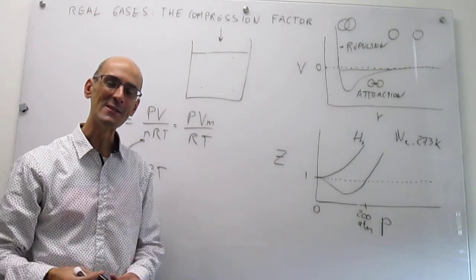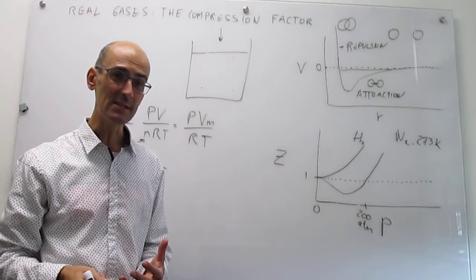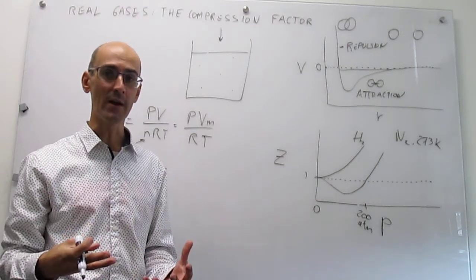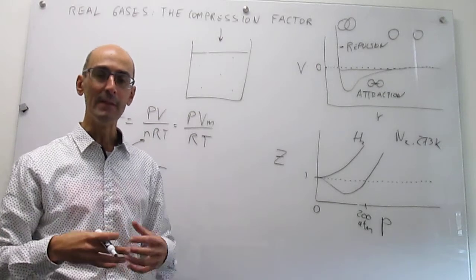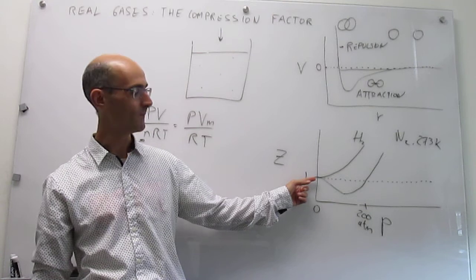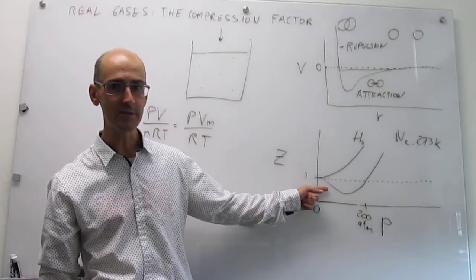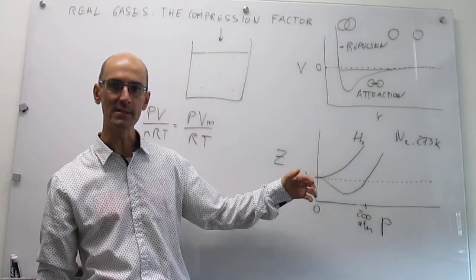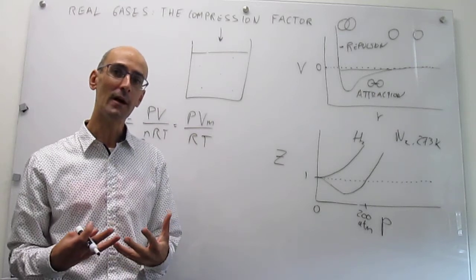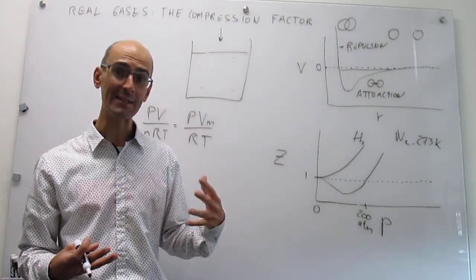To summarize: real gases deviate from ideality especially at high pressures, and the main cause is real intermolecular interactions — either attractions or repulsions. When attractions dominate, the compression factor Z falls below one, meaning the gas is easier to compress. When repulsions dominate, Z rises above one, meaning the gas is harder to compress. In the next videos we will look at equations of state that incorporate the effects of attractions and repulsions, allowing us to treat real gases beyond the ideal gas approximation.